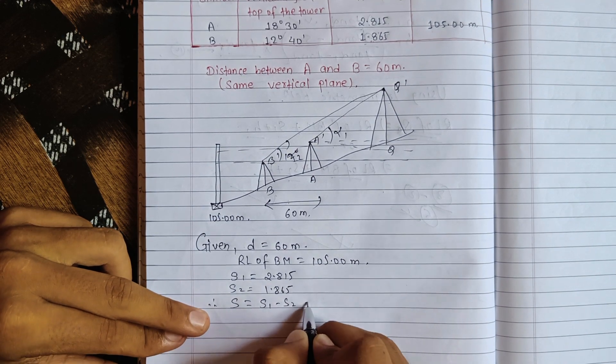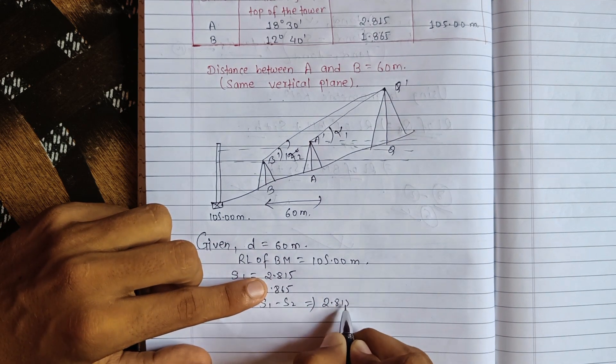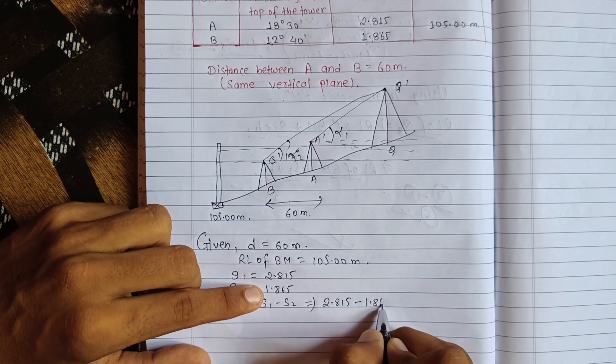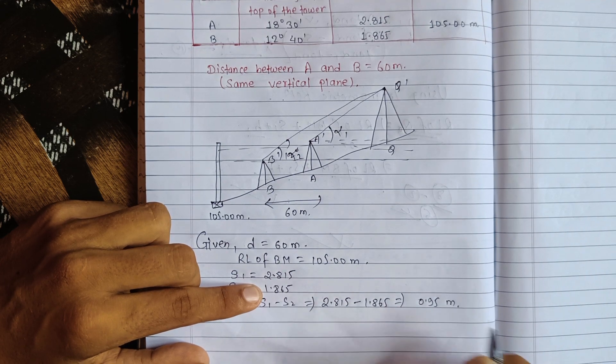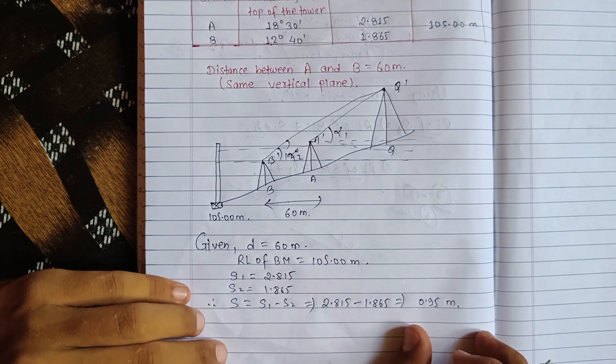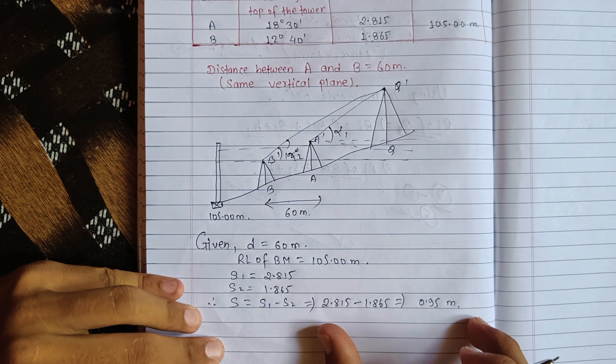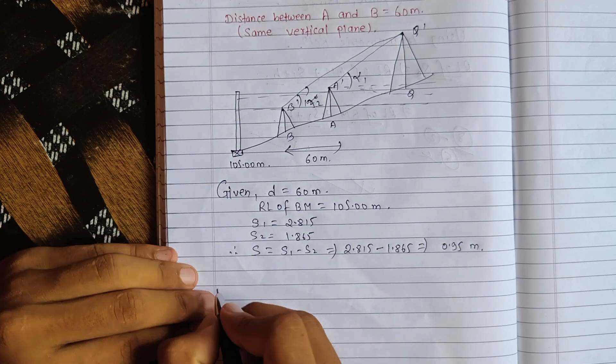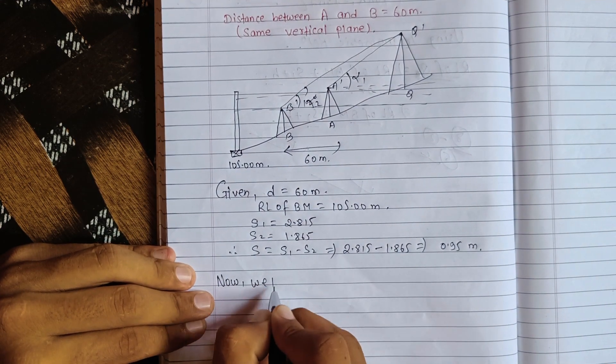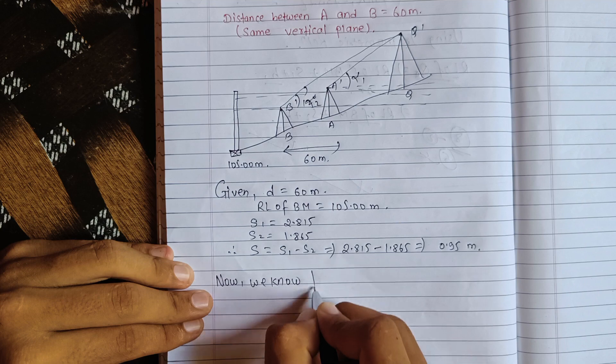S1 is 2.815 minus S2 which is 1.865, so we get 0.95 meters. This is the answer when you subtract them. Now we know that in the formula, the station opening D is equal to...